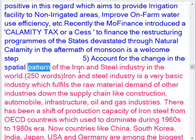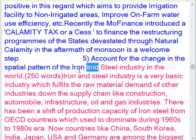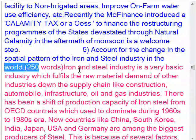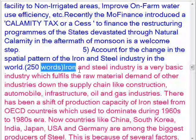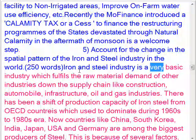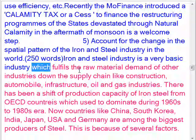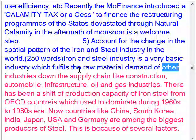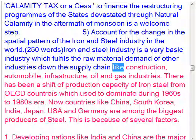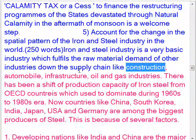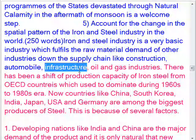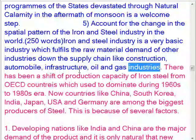Account for the change in the spatial pattern of the iron and steel industry in the world. Iron and steel industry is a very basic industry which fulfills the raw material demand of other industries down the supply chain like construction, automobile, infrastructure, and oil and gas industries.